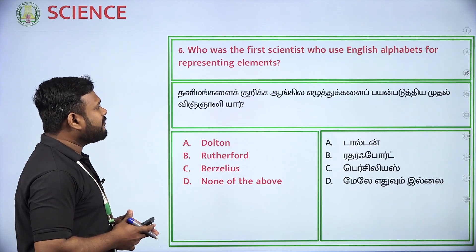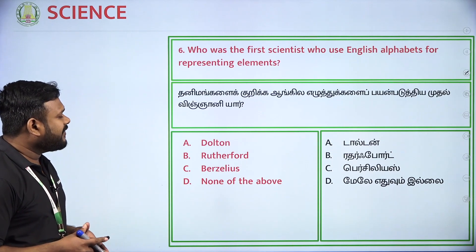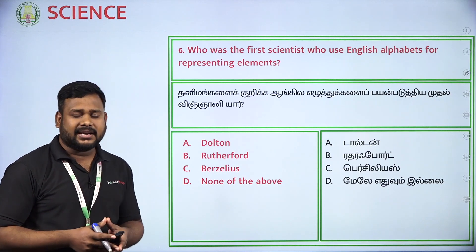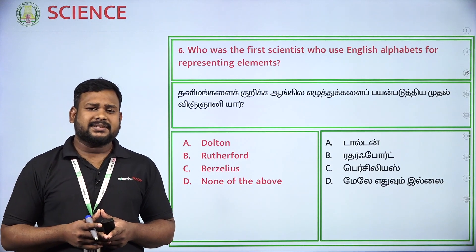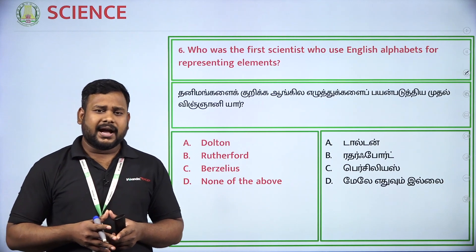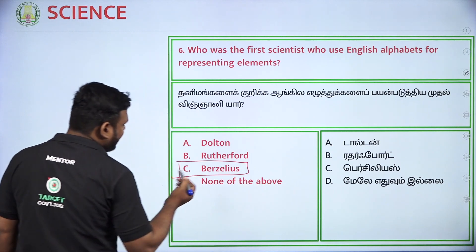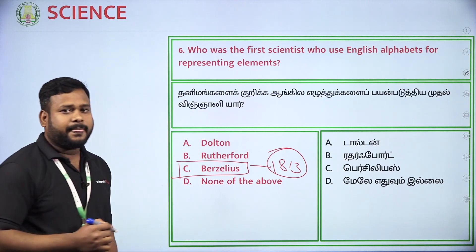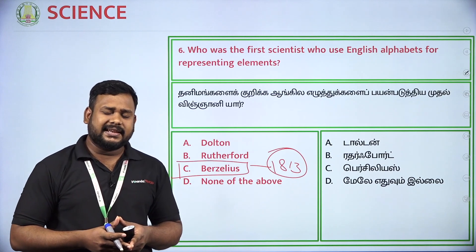Who was the first scientist who used English alphabets for representing elements? Options: Dalton, Rutherford, Berzilius. The first scientist to use English symbols and alphabets for elements was Berzilius. So option C — Berzilius — is the answer.